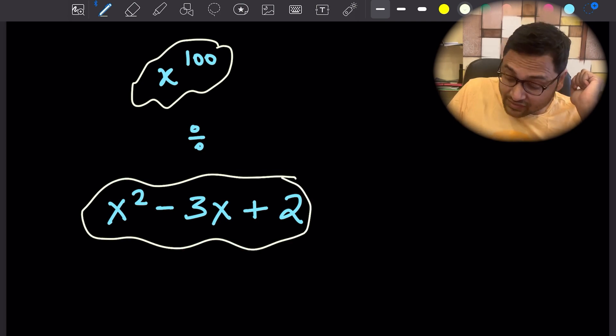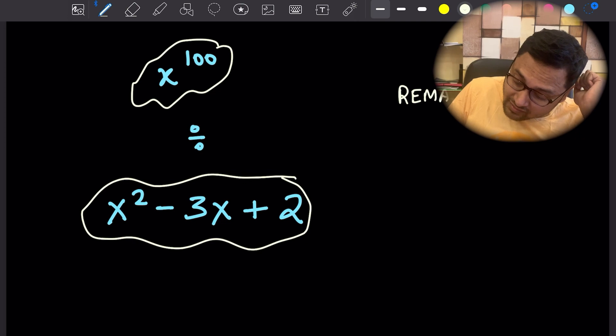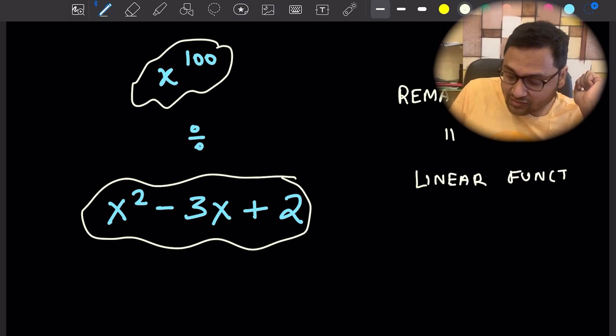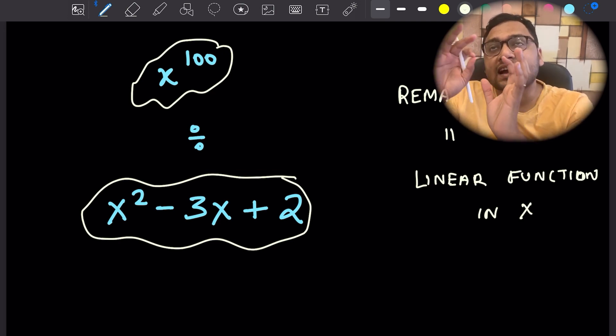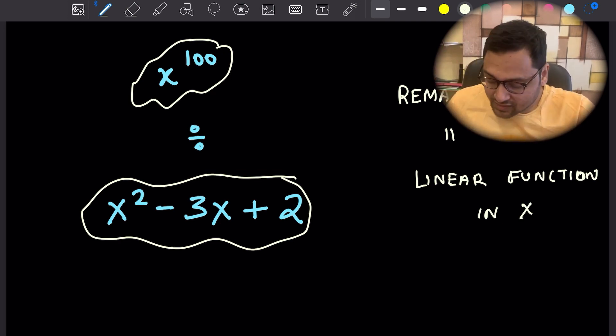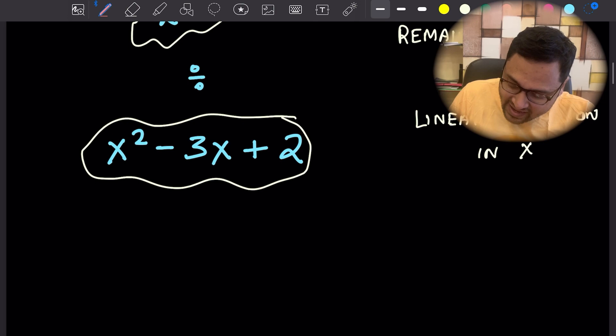The first thing is, if you divide any polynomial by a quadratic, the remainder is a linear function in x. What that means is it's something times x plus something, maybe like ax plus b.